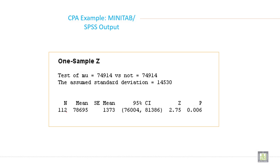This is just output of MINITAB, SPSS output of the CPA example. So here the p-value is 0.006 and it is less than alpha. Alpha is 0.05. So if it is less than alpha, reject the null hypothesis. That means the average salary in the Saudi hospital employee has increased.